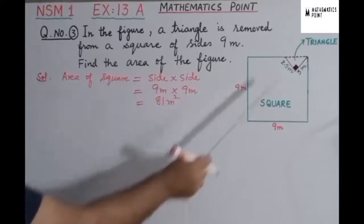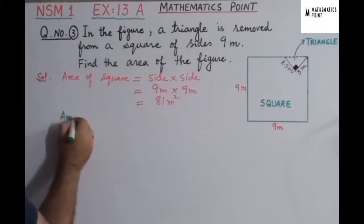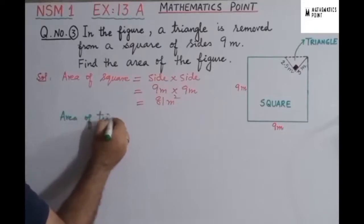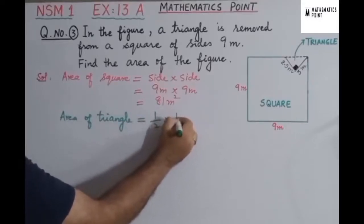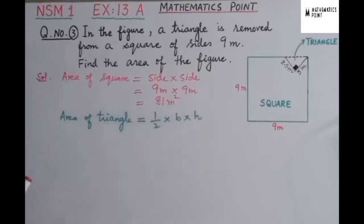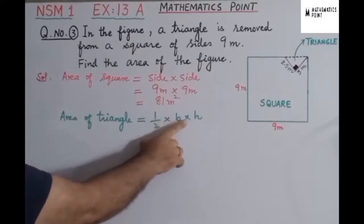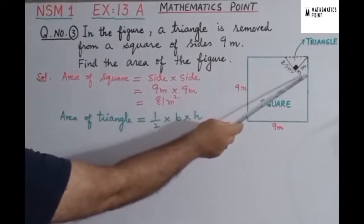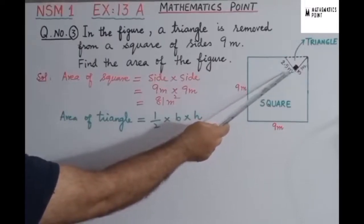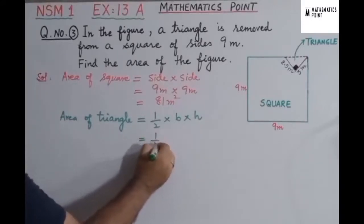Now we will find the area of this triangle which we have to remove. The area of a triangle is equal to ½ × base × height. This is the formula to find the area of a triangle. If you look at this figure, the base is 3 meters and the height is 2.5 meters.